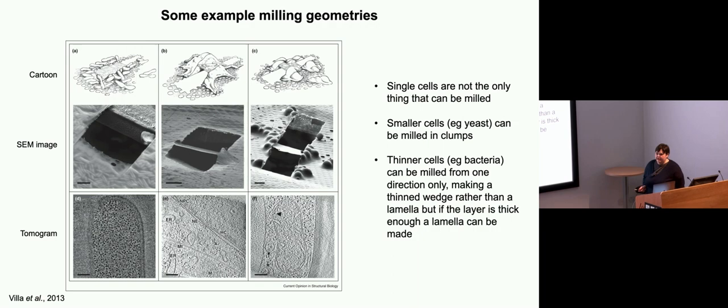Obviously, not everyone has the standard approach of cells growing on grids. Here are a couple of other examples that are fairly straightforward. Things that are a bit smaller, like yeast, they are quite easy. The way to do it is to try to get them to cluster a bit and then you can produce these lamellae that go through a cluster of a few. Then for bacteria, when you start to get smaller, it's more difficult to make this kind of lamella. So originally, people used to just mill from the top and create this wedge geometry, which has this thinned edge.